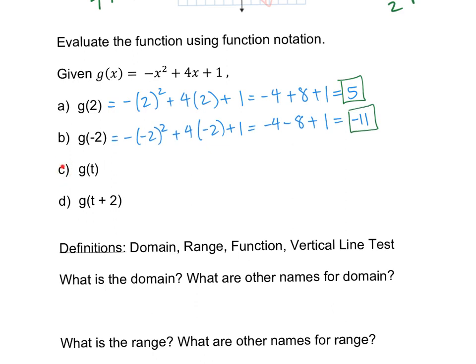For part C, it gets a little interesting because you're plugging in t. But it's really the same as before — you're replacing x with t, the new variable. So the result is negative t squared plus 4t plus 1. Just switch out the x's and now you have t's instead — that's how you switch out variables.